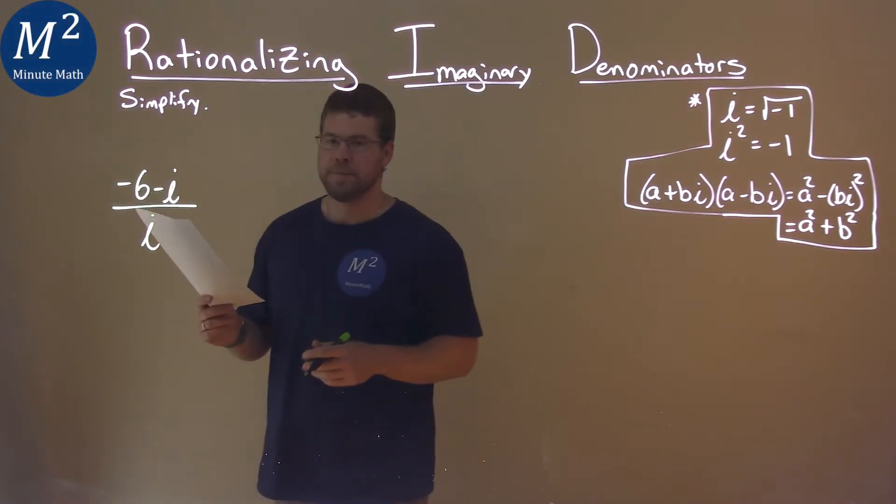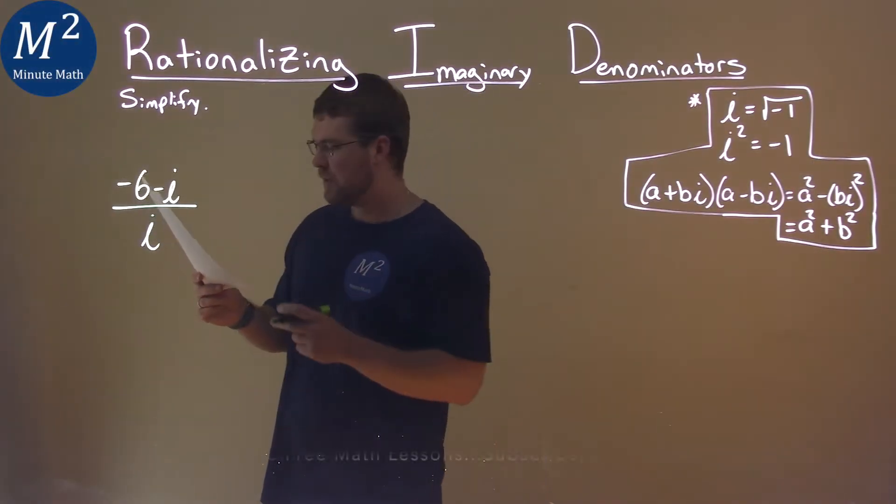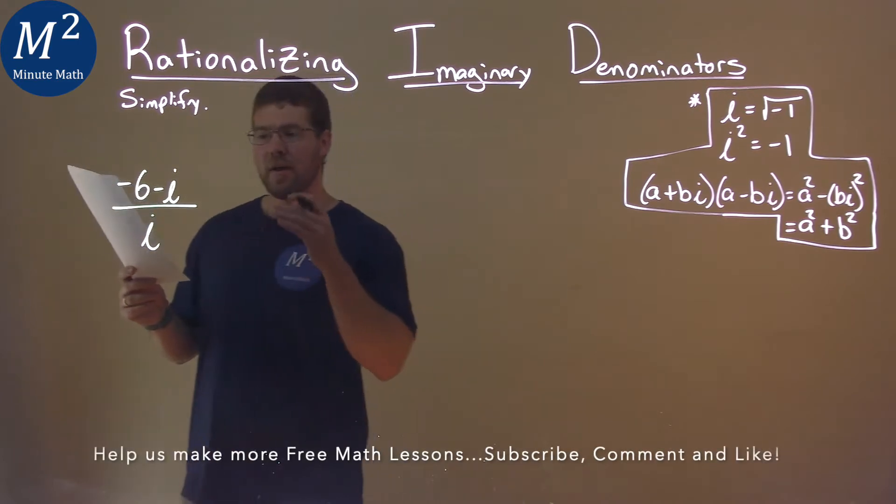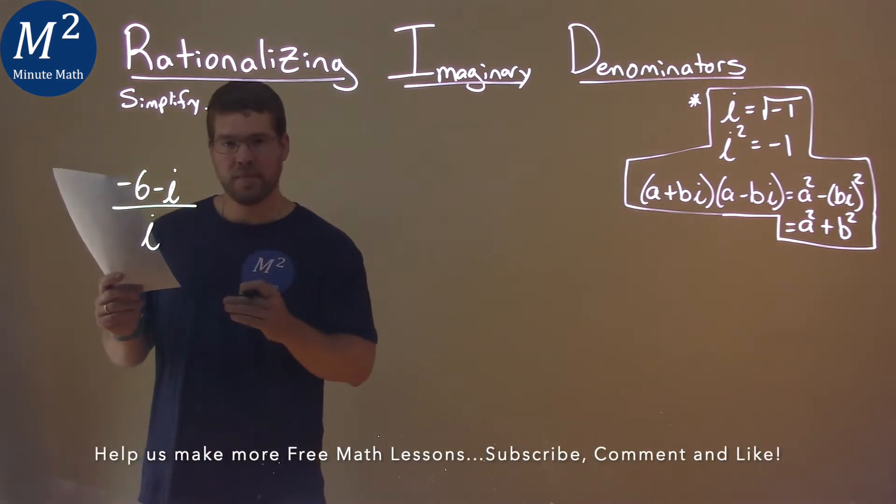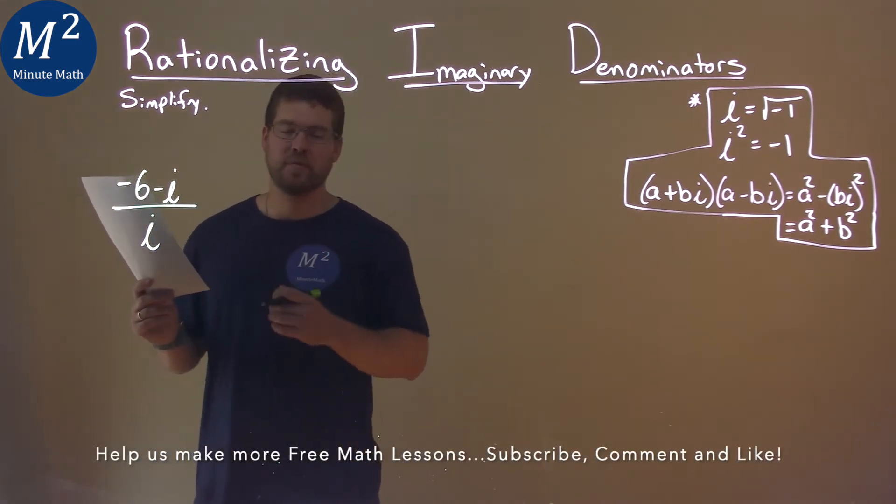We're given this problem right here: negative 6 minus i over i, and we have to simplify this.